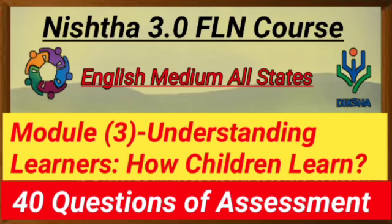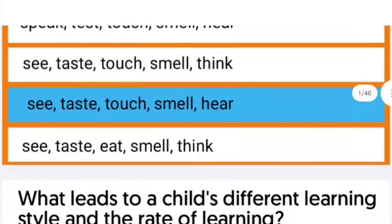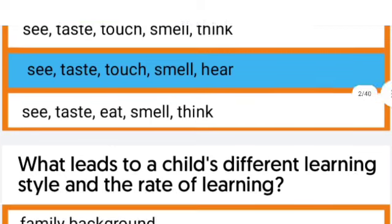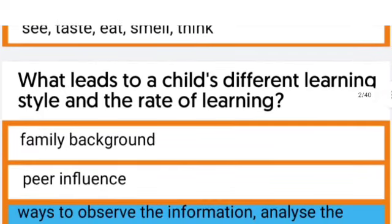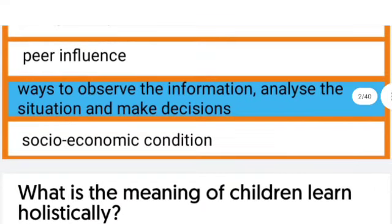The first question is on your screen: What are the five senses? The right answer is see, taste, touch, smell, and hear. The next question is: What leads to a child's different learning style and the rate of learning? The answer is ways to observe the information, analyze the situation, and make decisions.